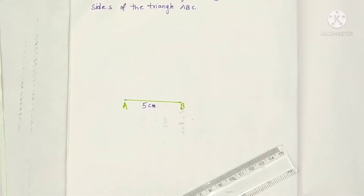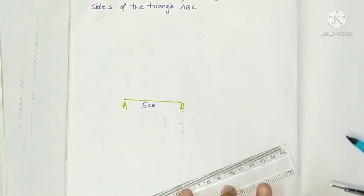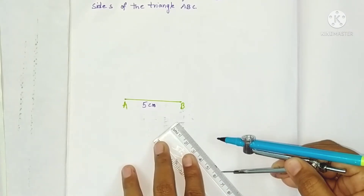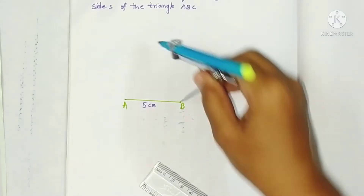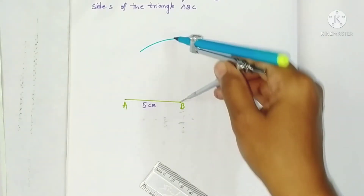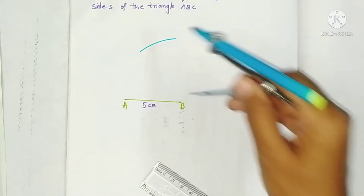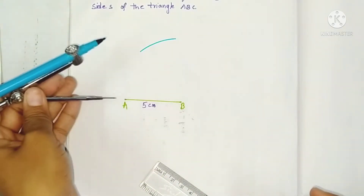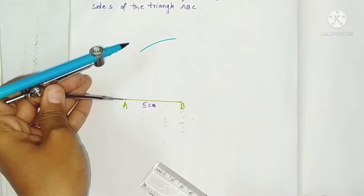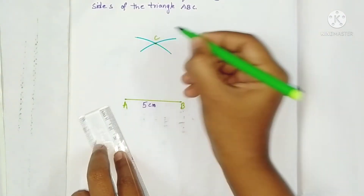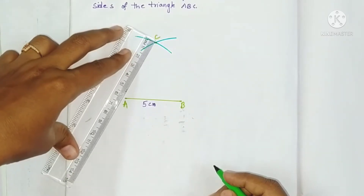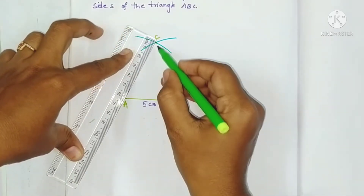To construct the triangle ABC, we draw arcs first. With 6 centimeters I am taking BC at 6 centimeters — draw an arc from B with 6 centimeters, and similarly from A draw another arc with 6 centimeters. These two arcs intersect at vertex C. Now join AC and BC.